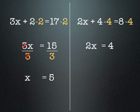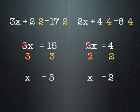To undo the 2x, we need to divide both sides by 2. Again, we have a 2 on the top line and a 2 on the bottom line on the left, so the 2's cancel out. And 4 divided by 2 equals 2. So x equals 2.